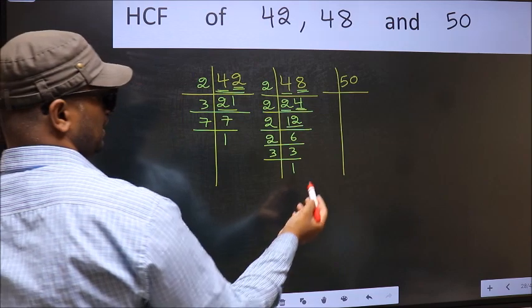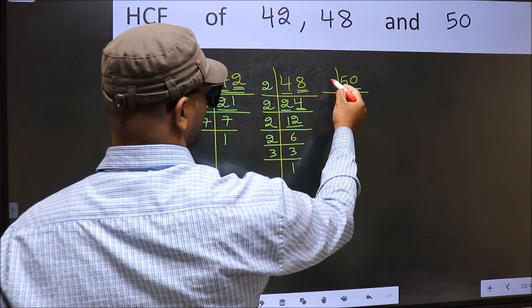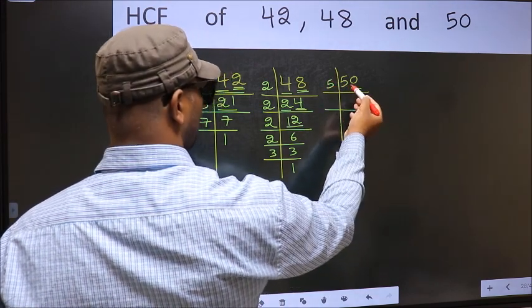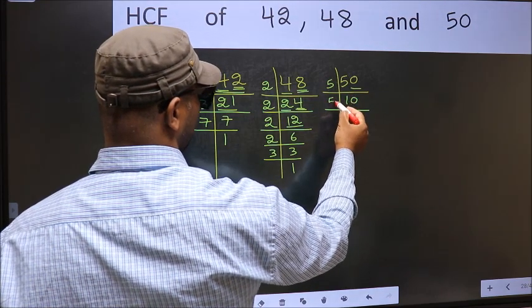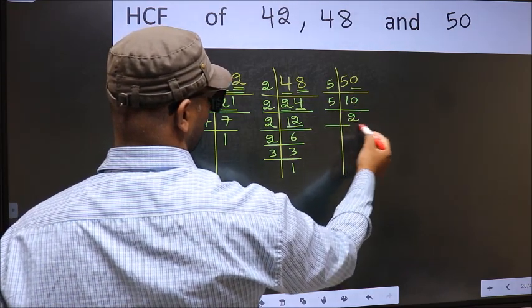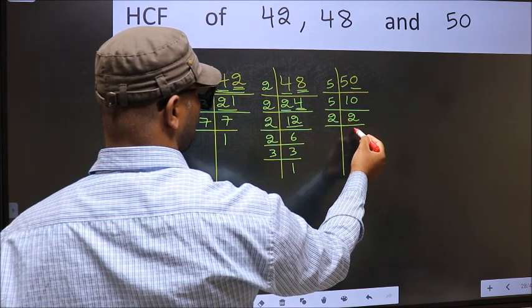The other number. Last digit 0, so take 5. When do we get 50 in 5 table? 5 tens, 50. Now 10 is 5 twos, 10. 2 is a prime number, so 2 ones, 2.